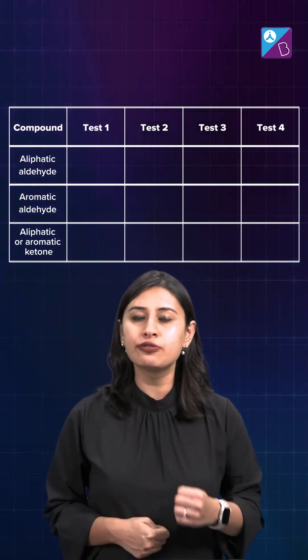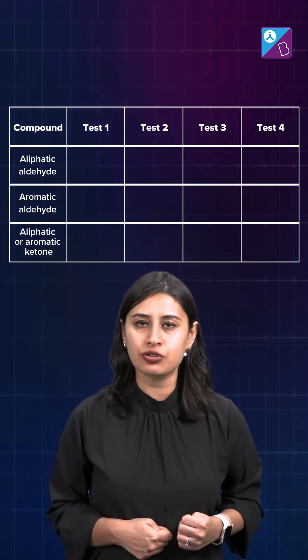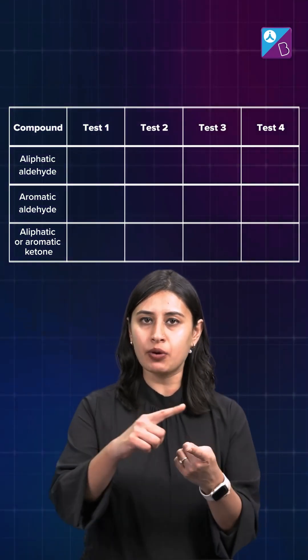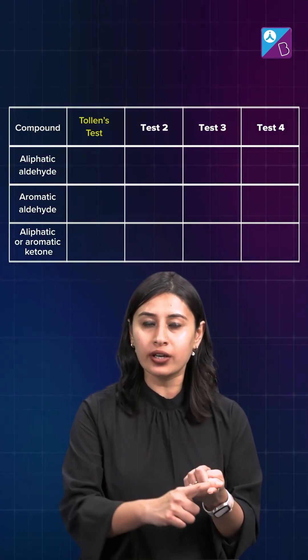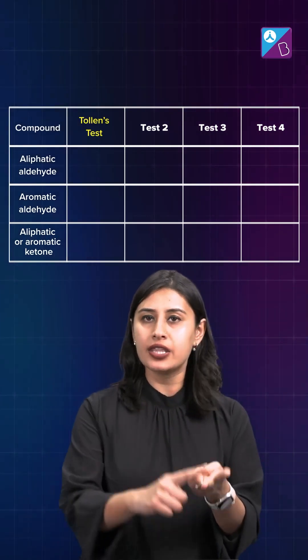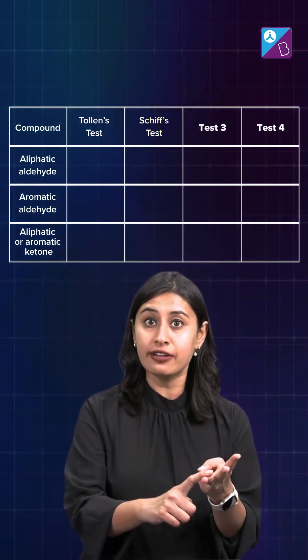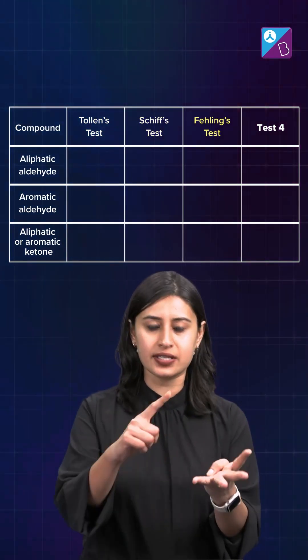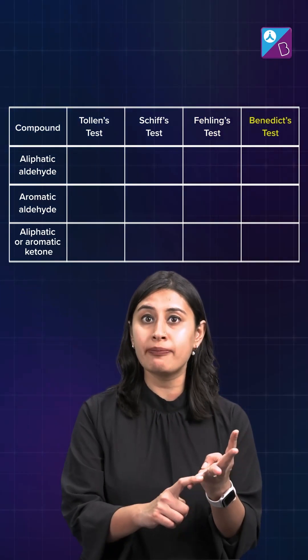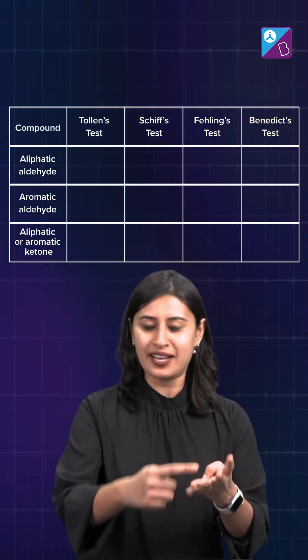You may use four oxidation reactions. Number one, Tollens' test. Number two, Schiff's test. Number three, Fehling's test. Number four, Benedict's test.